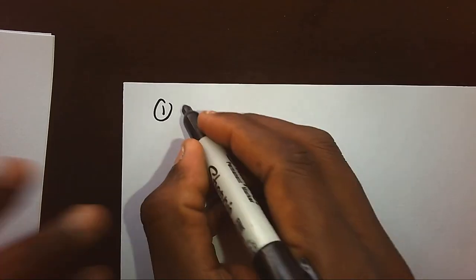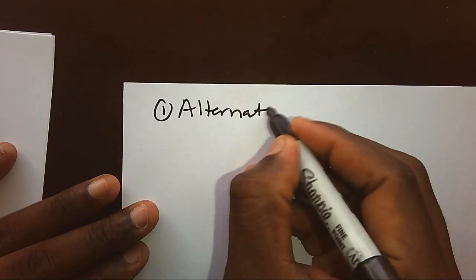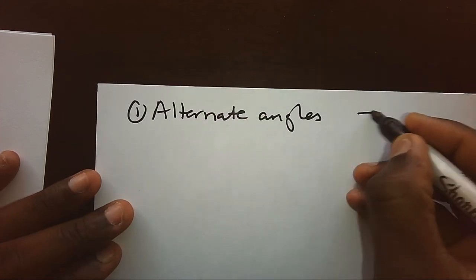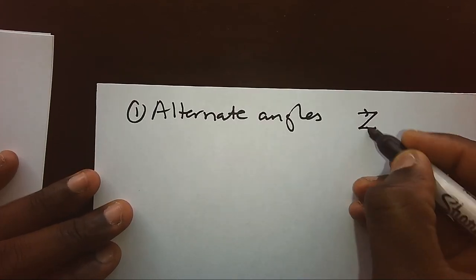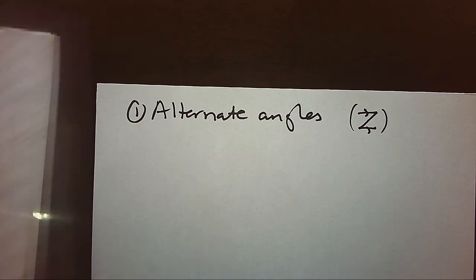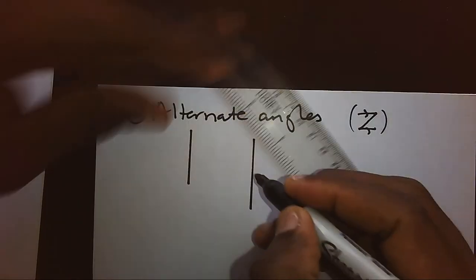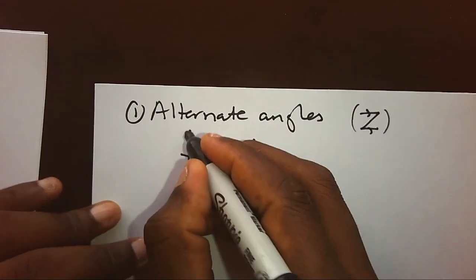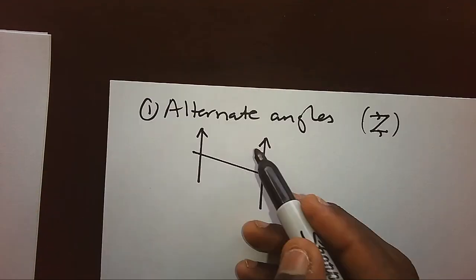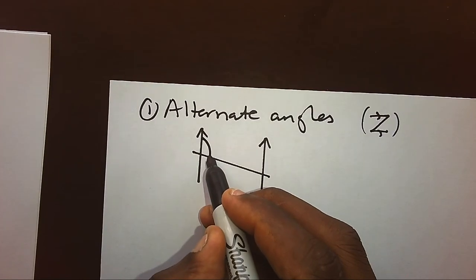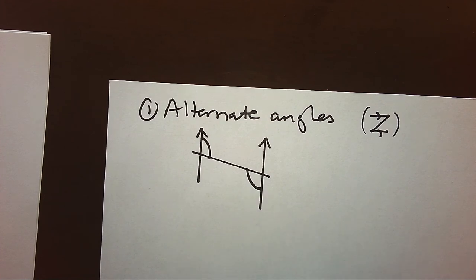Now in order for us to solve questions in bearing, we need to know some other parts that can help us. One, we need to know about alternate angles. Other students call them Z angles. Alternate angles come from parallel lines.